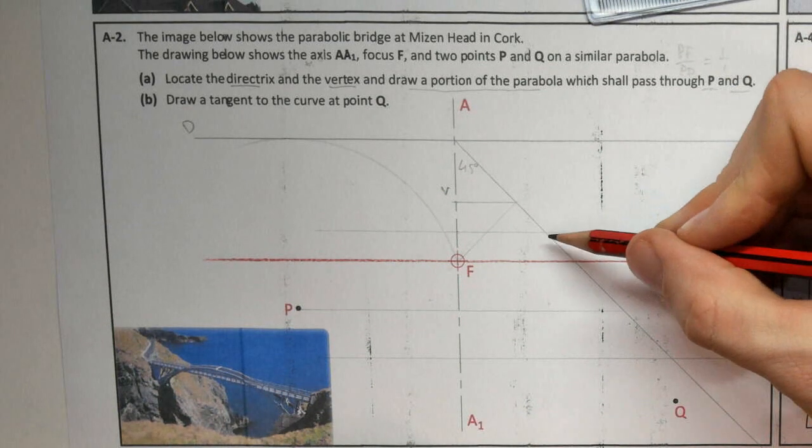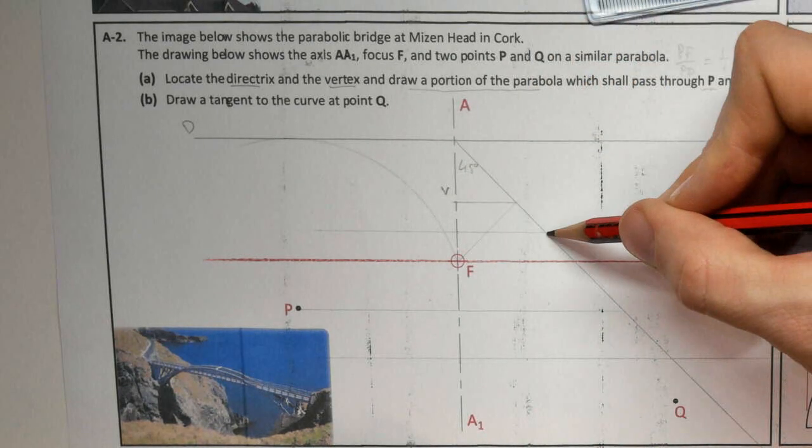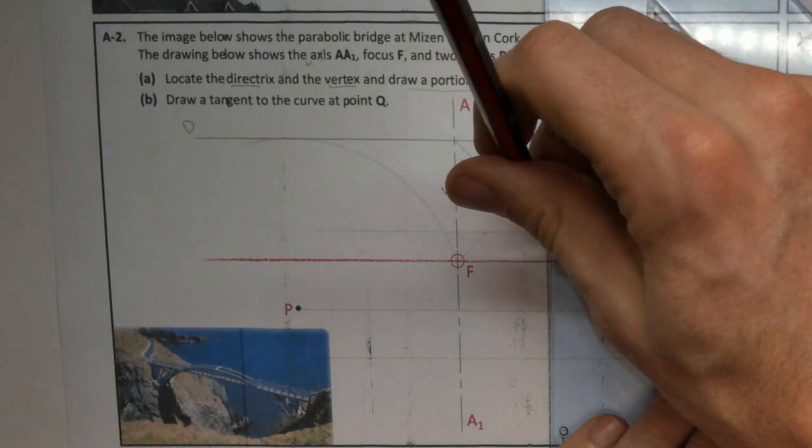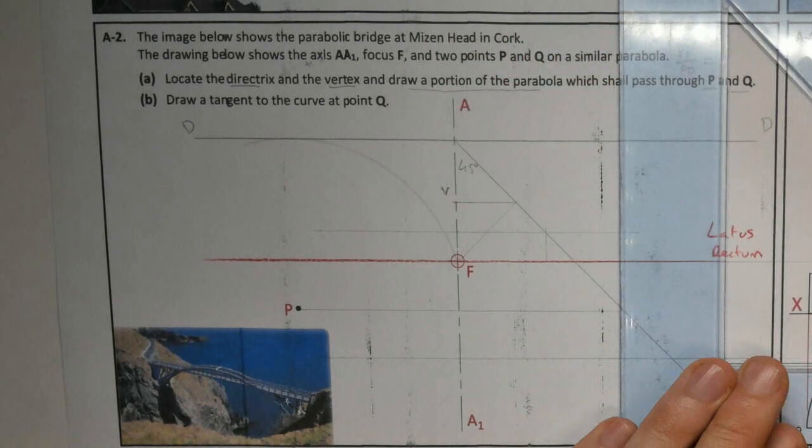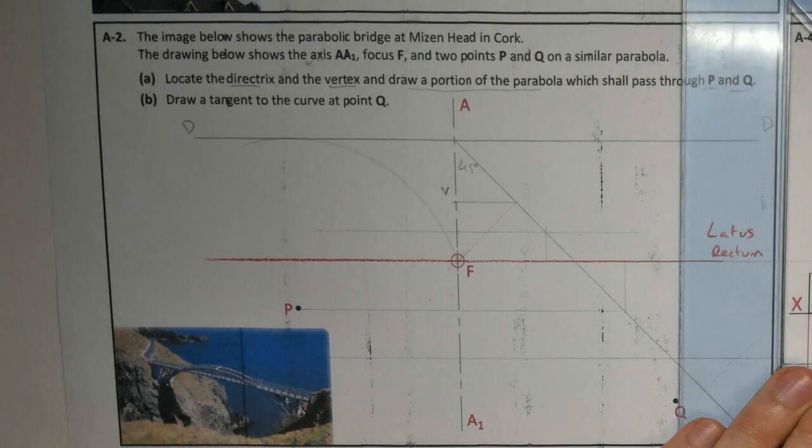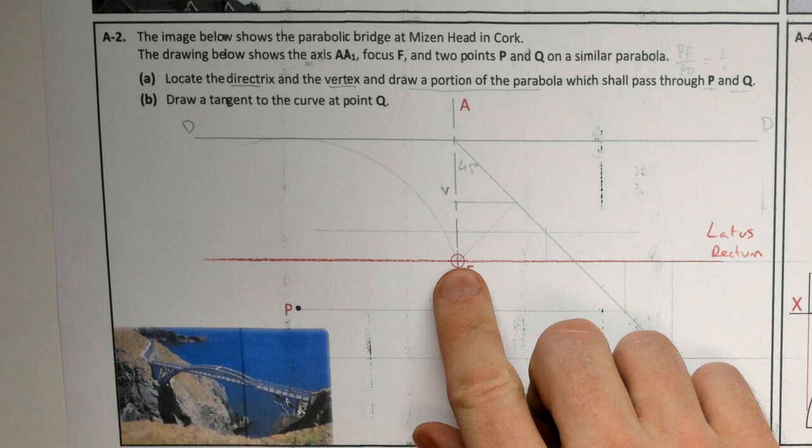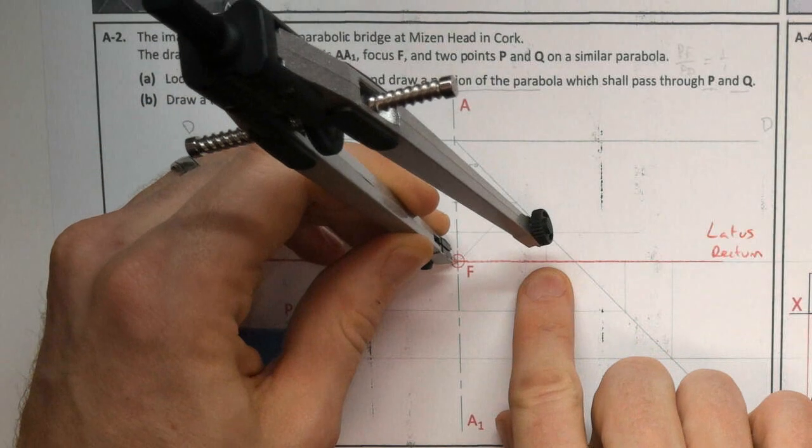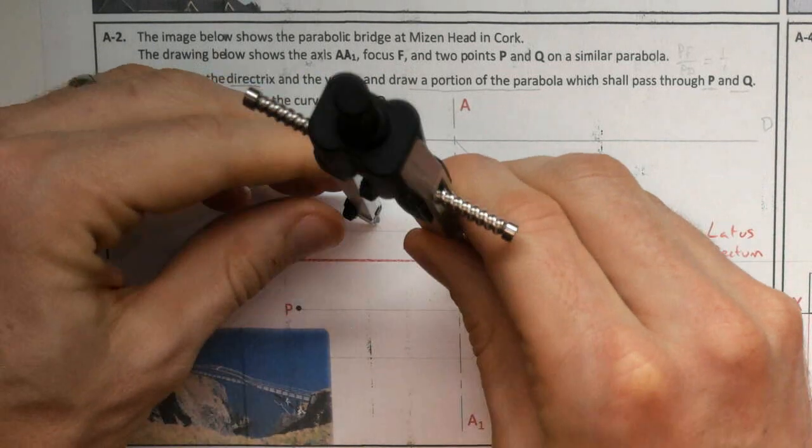Every one of these lines, or ordinates, as they hit the line of eccentricity, I need to draw towards the latus rectum. From F, I'm going to swing that distance where it hits the latus rectum back onto the ordinate. And I need it on the opposite side as well.